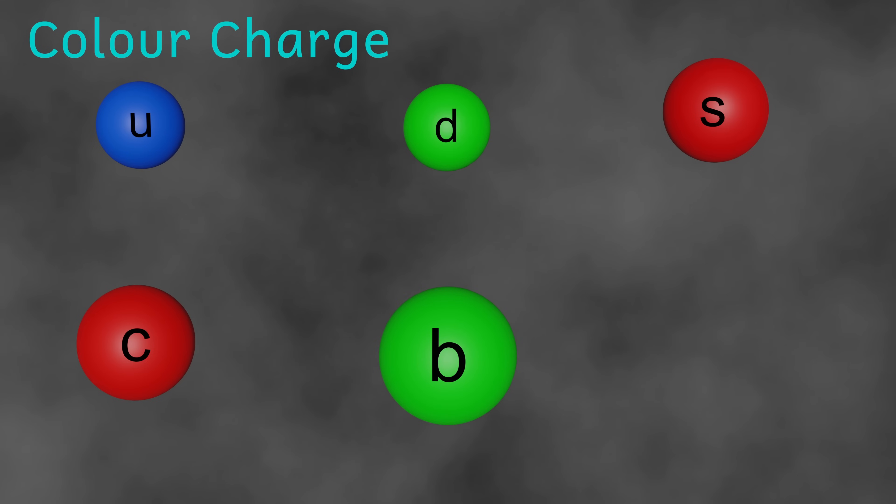Quarks also have what's known as colour charge. This isn't really anything to do with actual colour, because at the sizes we're talking about, the concept of colour doesn't exist. Colour charge, though, is a neat way of describing a kind of interaction that the quarks undergo. And it's the colour charge that underpins a quark's ability to come together and form particles. So more about that in a little while.